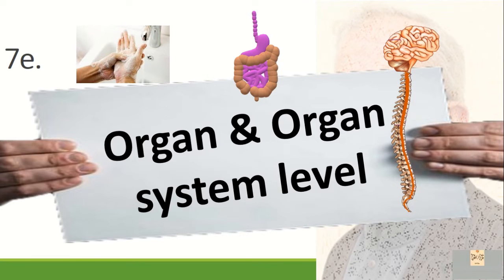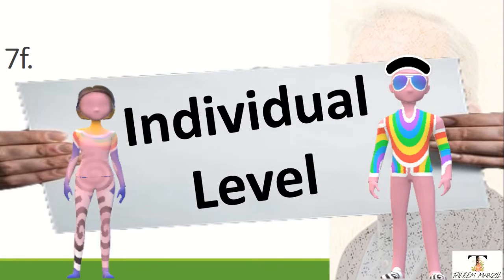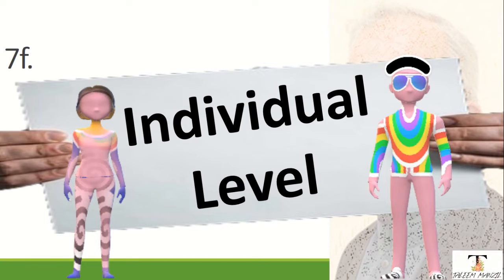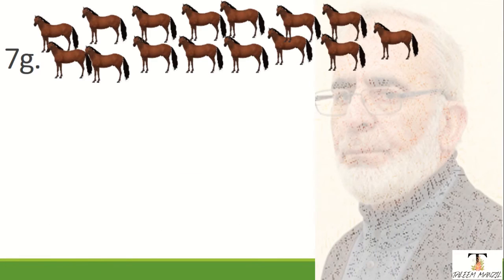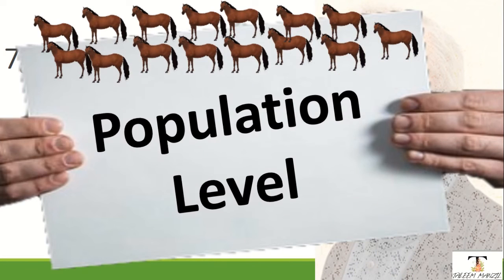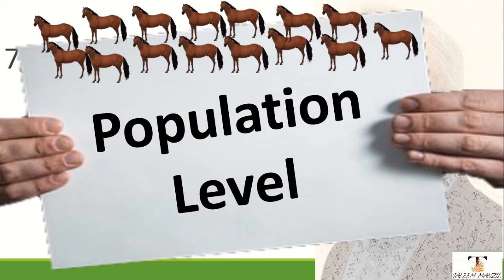Then you have organ and organ system. Then you have individual levels, which means cells, tissues, organs, and organ systems make up an individual. It becomes a whole form — a population. This is the population level, which is one species, like the human population.